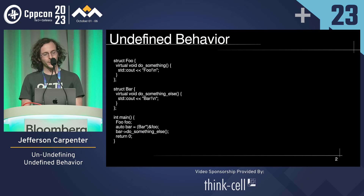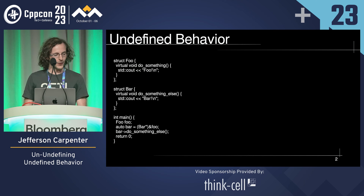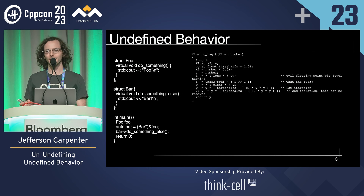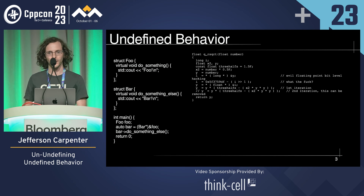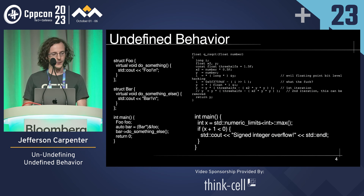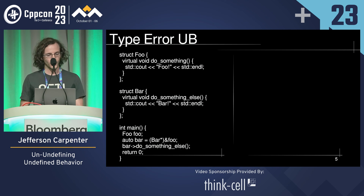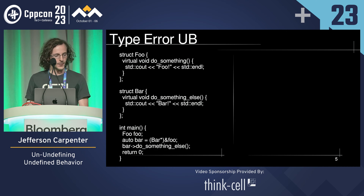Here's an example of UB: we are type punning, treating a foo as if it were a bar. Here's another type punning example — the famous Quake inverse square root, where we're treating a float as if it were an int. And then here's some signed integer overflow. So let's see what we can do about this.